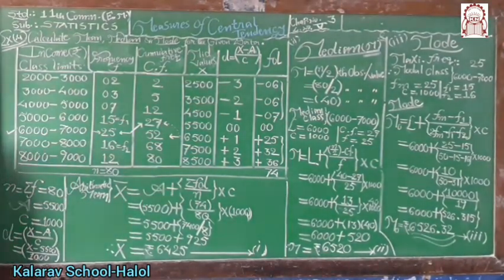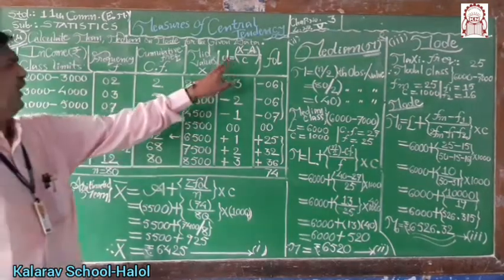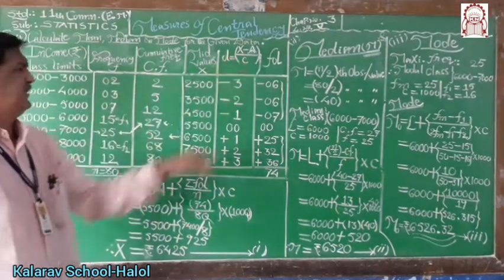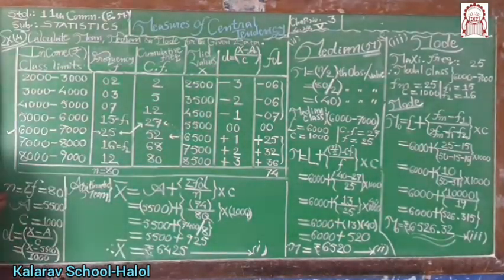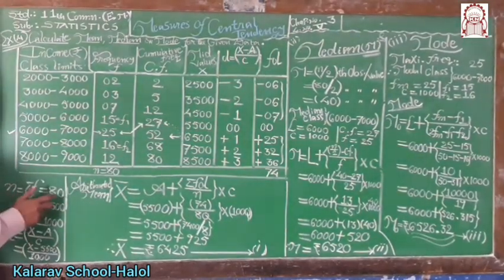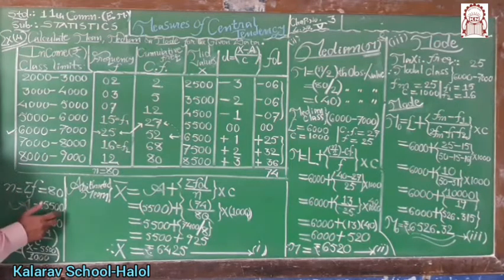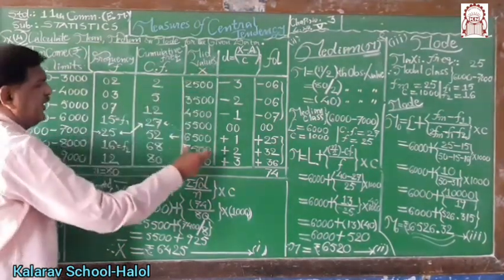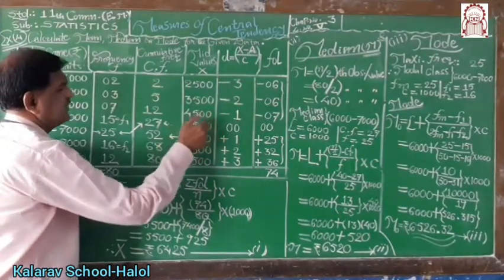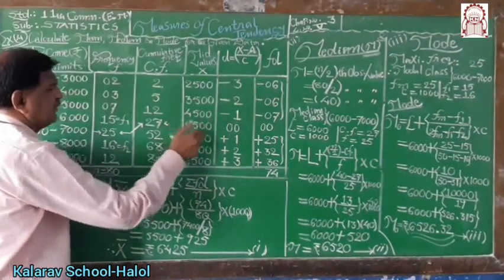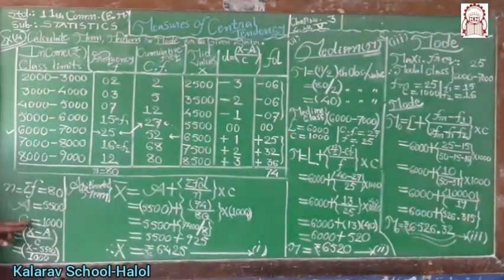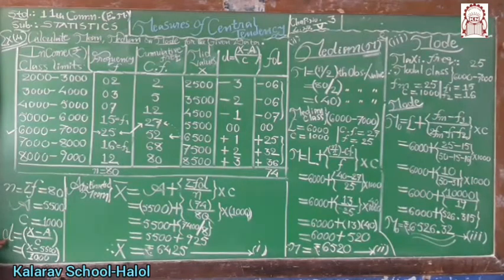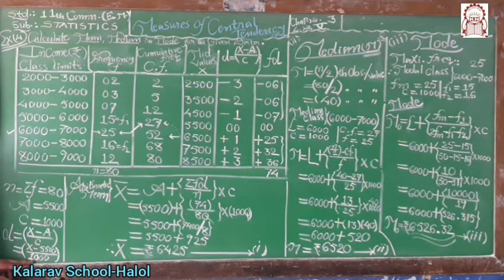Next, calculate D. D is equal to (x minus A) divided by C, where A means the assumed mean taken from the mid-values. For convenience, assume A equals 5500. C means class interval, which equals 1000.